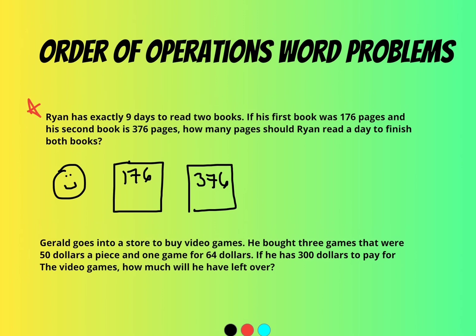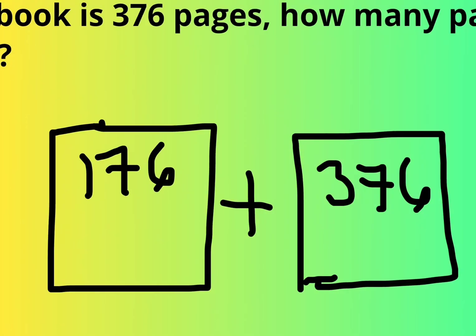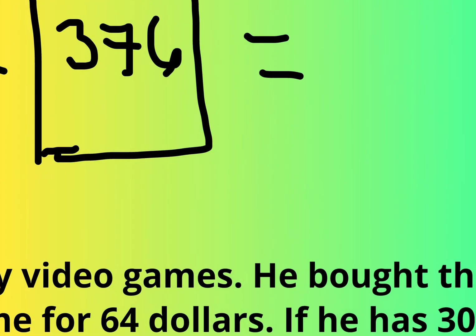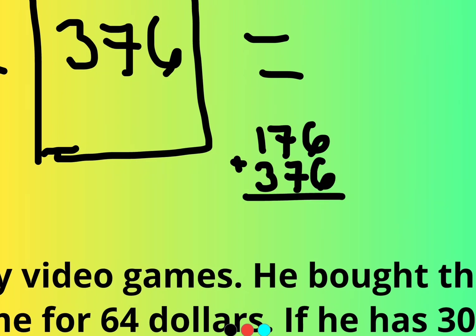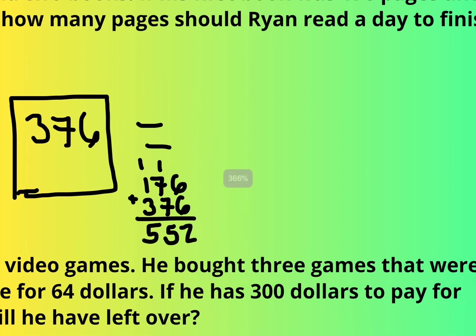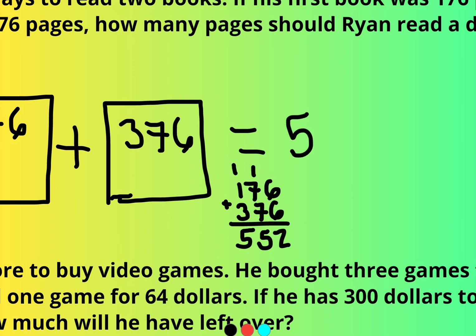Now, what I would tell you to do is figure out how many pages both of those books would be together. So I would say, okay, 176 plus 376. 6 plus 6 is 12. 1 plus 7 plus 7 is, well, 7 plus 7 is 14, plus 1 is 15. Carry the 1. And 1 plus 1 plus 3 plus 1 is 5. So that means, in all, Ryan has to read 552 pages.